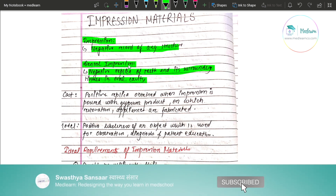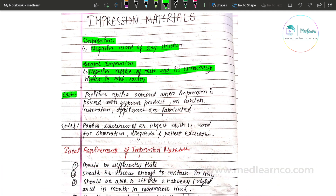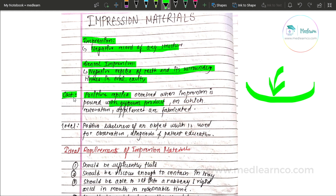Related to impression, another term is 'cast.' A cast is the positive replica that is obtained when the impression is poured with gypsum products. From this cast, restorations and appliances can be fabricated. A 'model' is also a positive likeness of any object which is used for observation, diagnosis, and patient education.